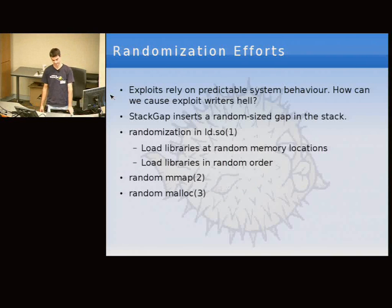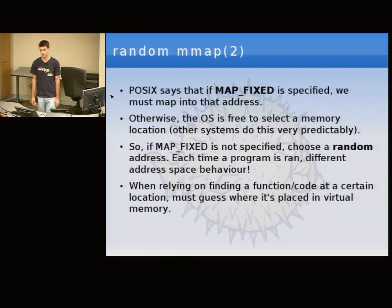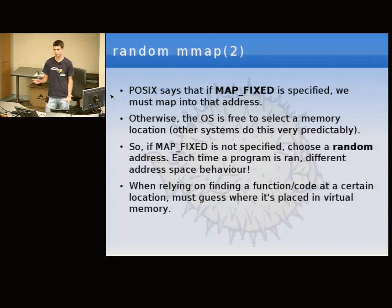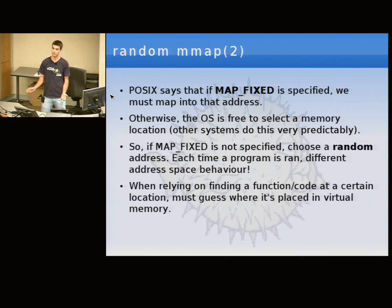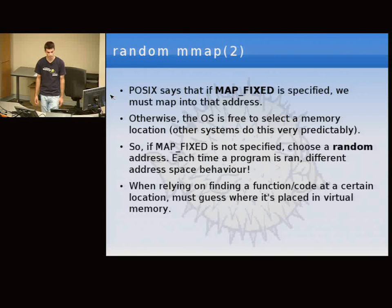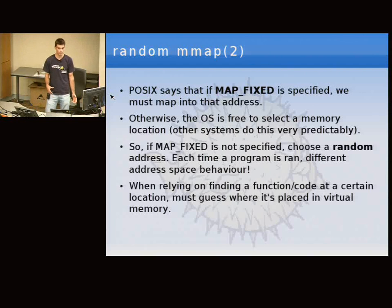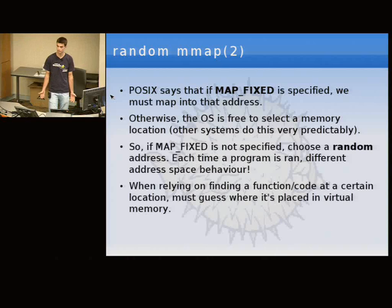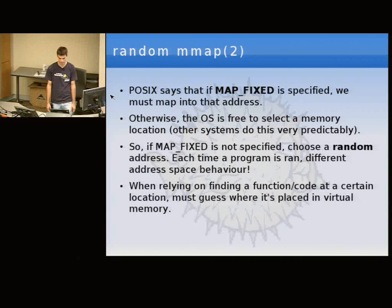mmap is a system call that maps files and devices into memory. You can specify an address with the MAP_FIXED flag, in which case we can't do anything. But otherwise, in 99% of cases where programmers don't specify an address, we map it randomly somewhere on the heap. This still complies with POSIX because nothing in the standard says we can't do that. If an exploit relies on something being mapped in the right place, this makes that impossible.